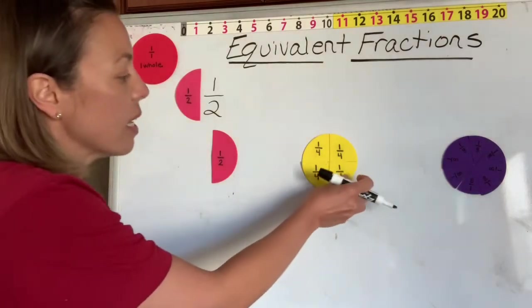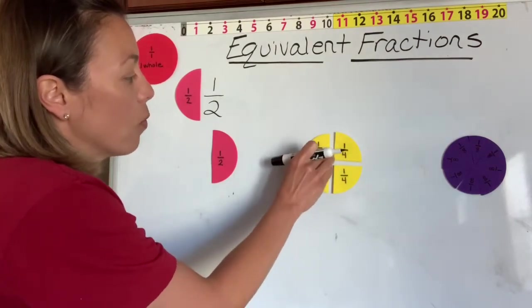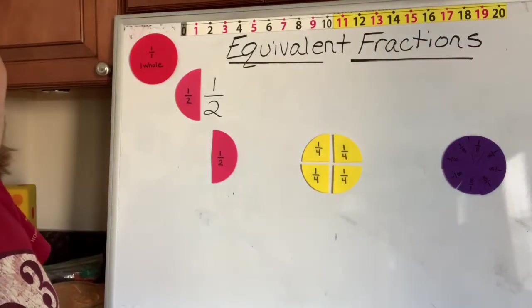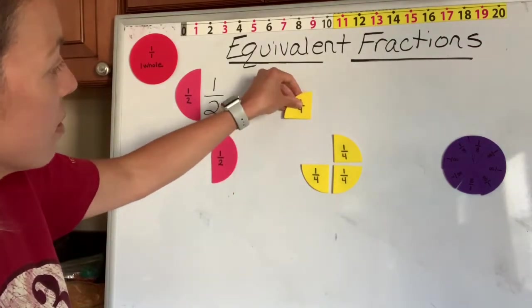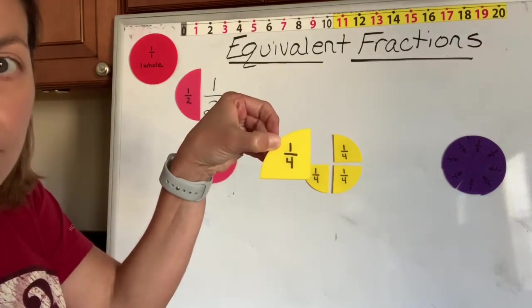If we cut our circle into four equal pieces and took out one of those four pieces, then our unit fraction would be one fourth.